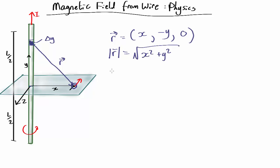And therefore we can work out the unit vector. So the unit vector in that direction is just r divided by mod r.